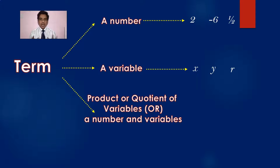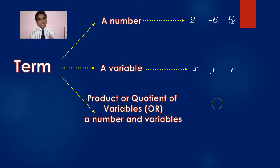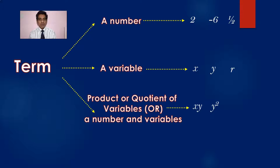The combination of variables — product of variables or quotient of variables — also forms a term. For example, y square is basically y into y, and this can be taken as a term. Or lm by n — l, m, n are three variables — l into m divided by n, this also can be taken as a term.